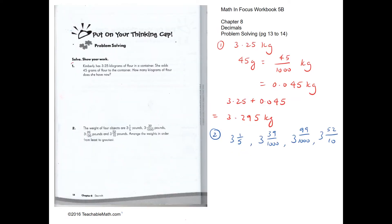Problem solving, question 1: Kimberly has 3.25 kilograms of flour and she has 45 grams more. We need to convert 45 grams to kilograms. Since there are 1000 grams in one kilogram, 45 grams is 0.045 kilograms. Adding them up: 3.25 plus 0.045 equals 3.295 kilograms.